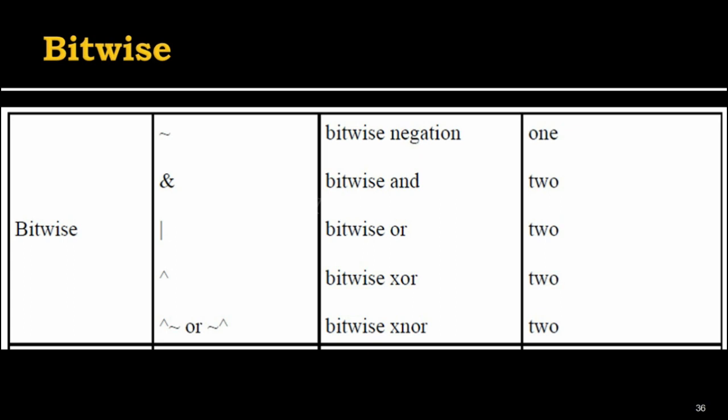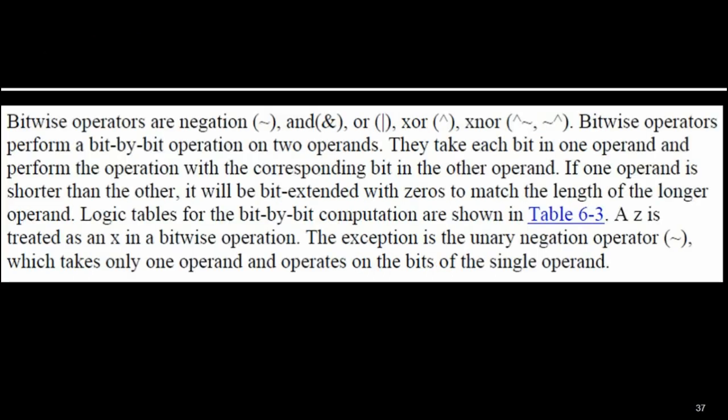Next are bitwise operations. Remember the logical operators — logical AND, logical OR, logical NOT. Here similarly we have bitwise AND, bitwise OR, bitwise XOR, and bitwise XNOR operations, as well as bitwise NOT. All bitwise operators take two operands except NOT, which takes only one operand. Bitwise operators are: NOT (~), AND (&), OR (|), XOR (^), and XNOR (^~ or ~^).